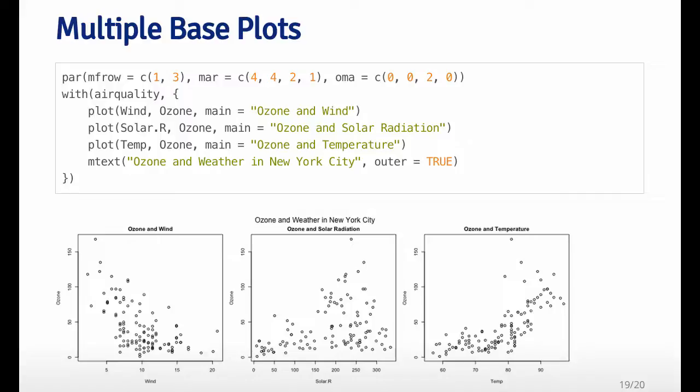So on the top, I want a little extra space so I can add the title 'Ozone and Weather in New York City,' which is a title for the entire panel of plots. And then I call plot three times to make the three different plots, and then I use mtext to add the outer title to this panel of plots.